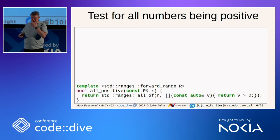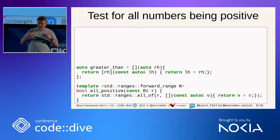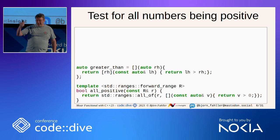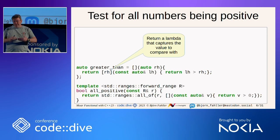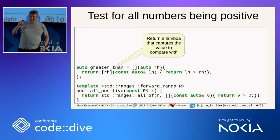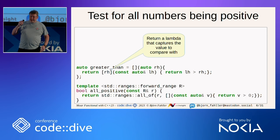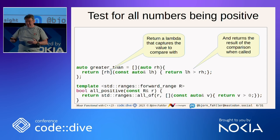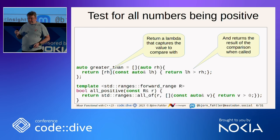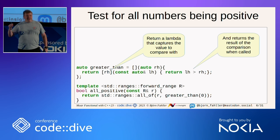We can do something more interesting: writing a higher-order function `greater_than` that accepts something we call RH. When called, it returns a lambda that captures RH. We have an indirection here. When that lambda is in turn called with an LH, we return the result of comparing LH with the captured value RH. So now we can write: `ranges::all_of(r, greater_than(0))`. I get absolutely giddy with joy when I see code like this, because this communicates the way we speak as humans — 'I want to check if all the values in r are greater than zero.'